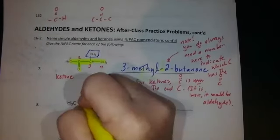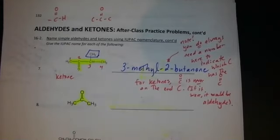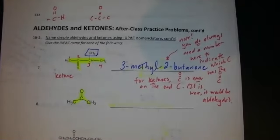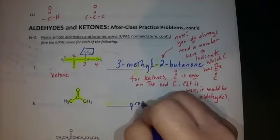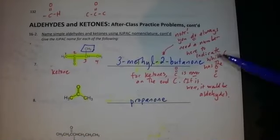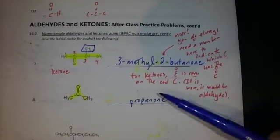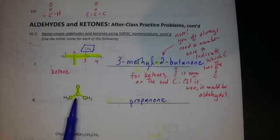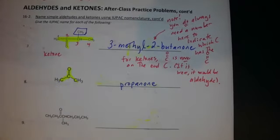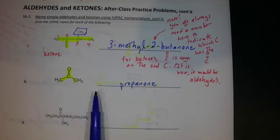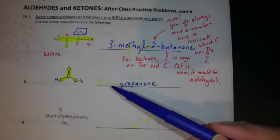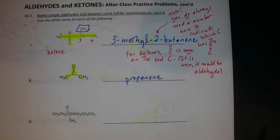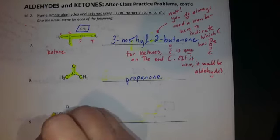Three carbons total gives propanone. Normally you always need a number, but propanone is the one exception — the C=O cannot be on carbon one or three because that would make it an aldehyde. It's the smallest possible ketone. If you put a '2' in front that's fine — everyone would still know what you mean.